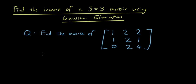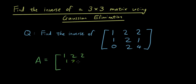So we want to find the inverse of a 3×3 matrix. Let this matrix be A. A equals 1, 2, 2 in the first row; 1, 2, 1 in the second row; and 0, 2, 4 in the third row. And we want to know what the inverse of A is.